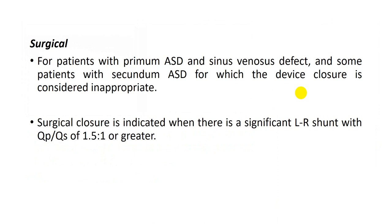Surgical closure of the atrial septal defect is indicated for patients with primum ASD — there is currently no device to close primum ASD — and for sinus venosus defects. Both must be closed surgically. Some patients with secundum ASD with deficient rim or certain anatomic considerations inappropriate for transcatheter closure also need surgical closure. Surgical closure is indicated when there is a significant left-to-right shunt with a Qp:Qs of 1.5 to 1 or greater. If the patient is asymptomatic, elective closure — whether transcatheter or surgical — is performed from age two to five years.